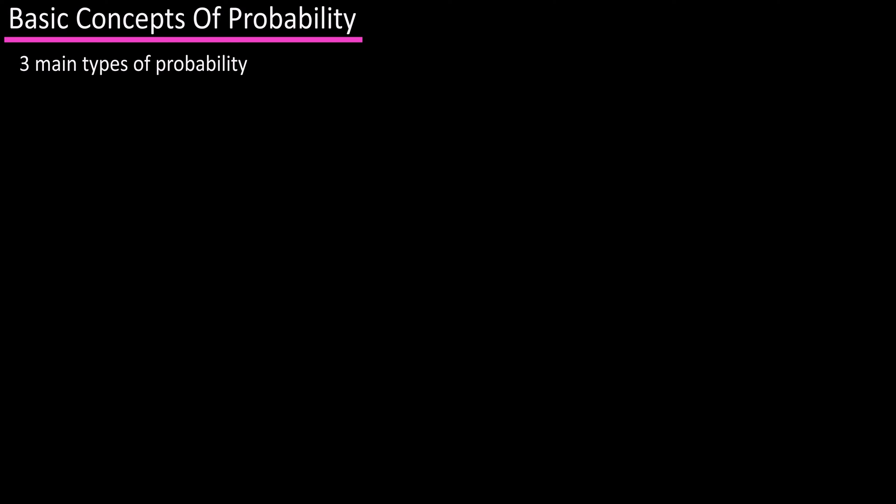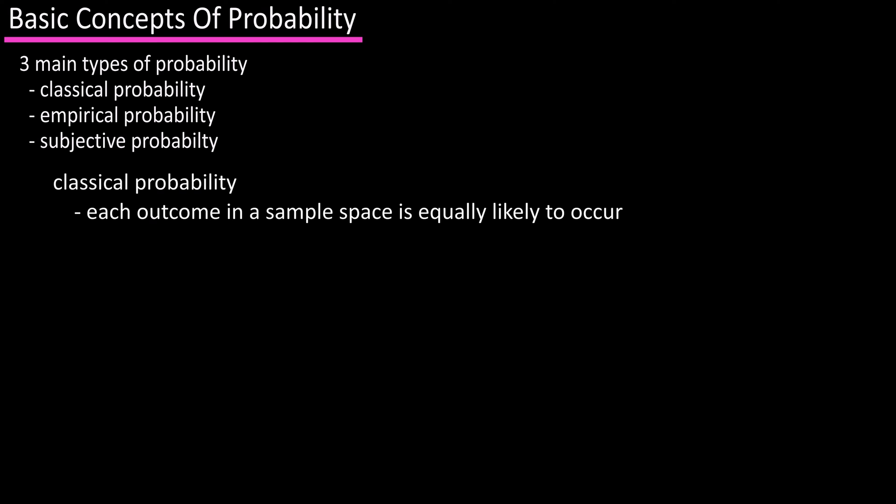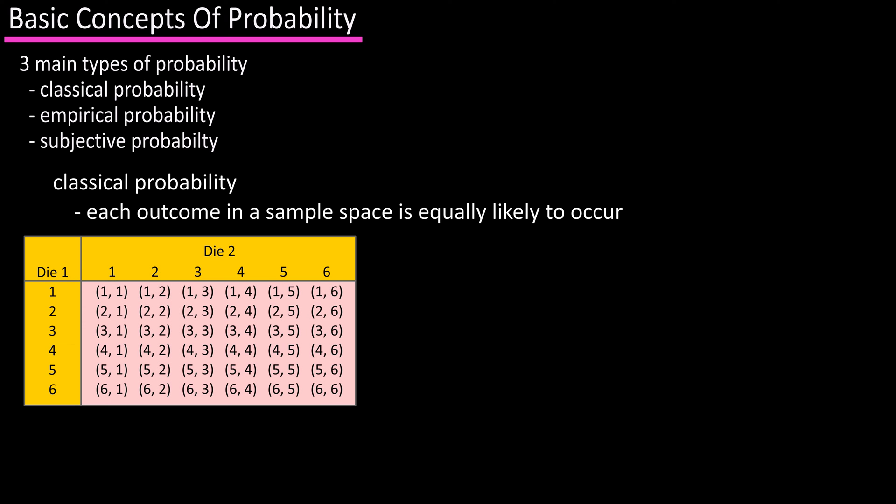There are three main types of probability: classical probability, empirical probability, and subjective probability. Classical probability is used when each outcome in a sample space is equally likely to occur. For instance, the sample space for rolling two dice, and each of these outcomes has the same chance to occur.